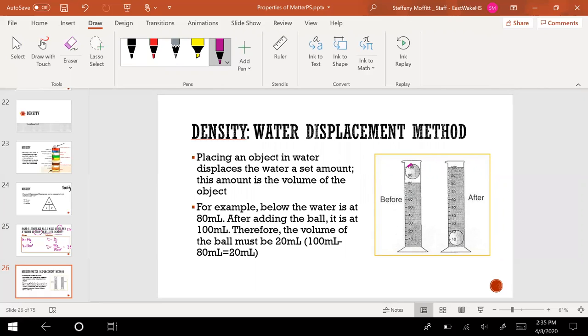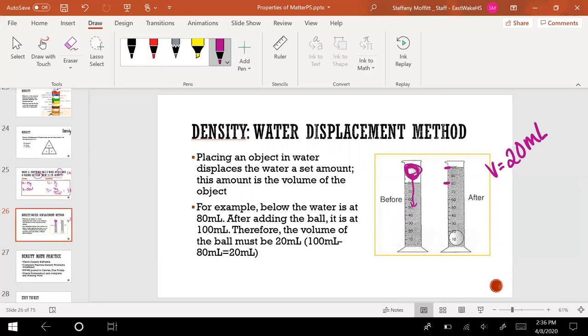So in this example, the ball here, it's hard to tell what the volume is just by measuring it, but we drop it in this liquid and the liquid volume goes from 80 up to 100, and that tells us that the volume of the ball must equal 20 milliliters. That's how you can use water displacement to find the volume of certain objects in order to find the density of those objects.